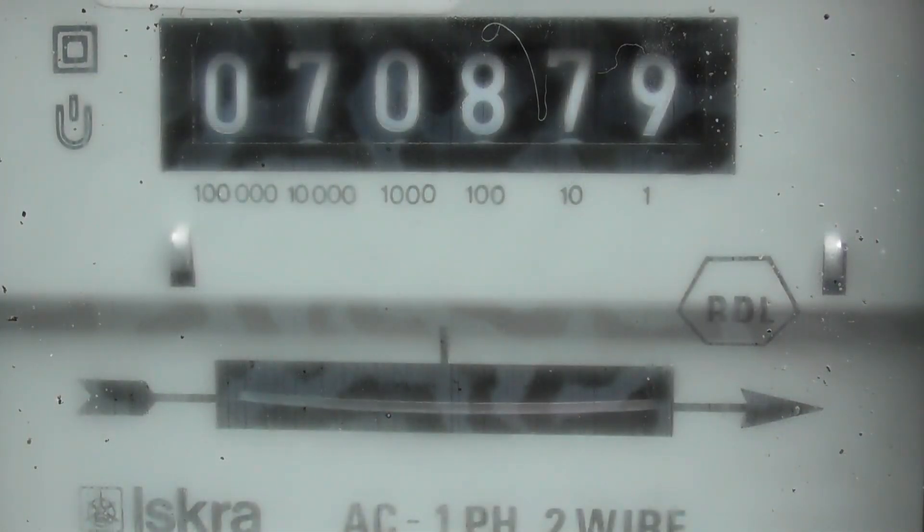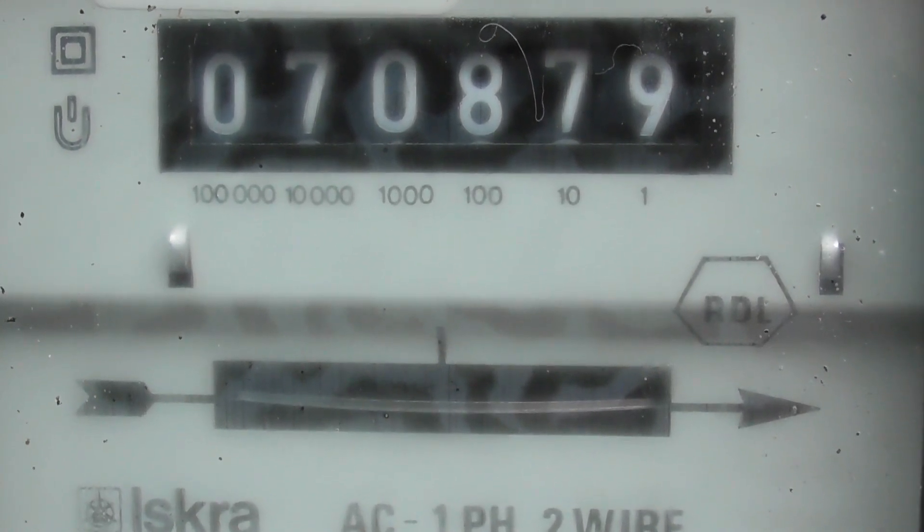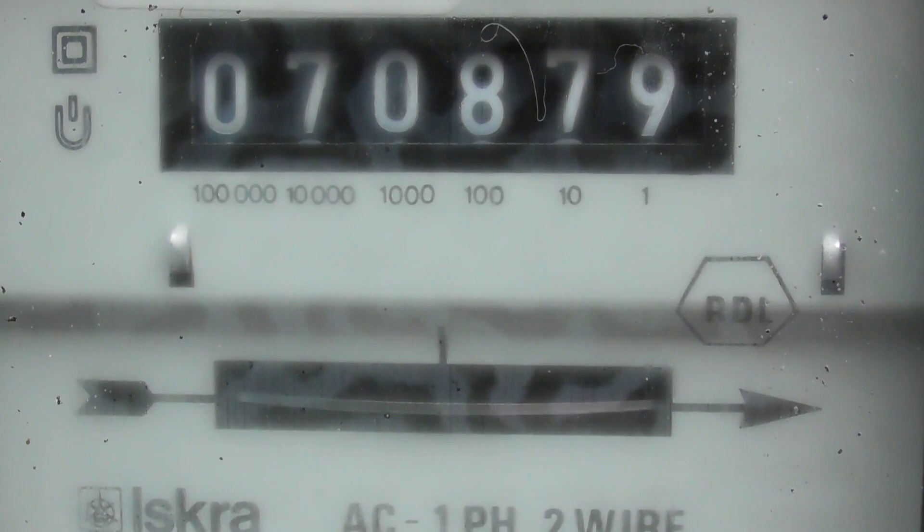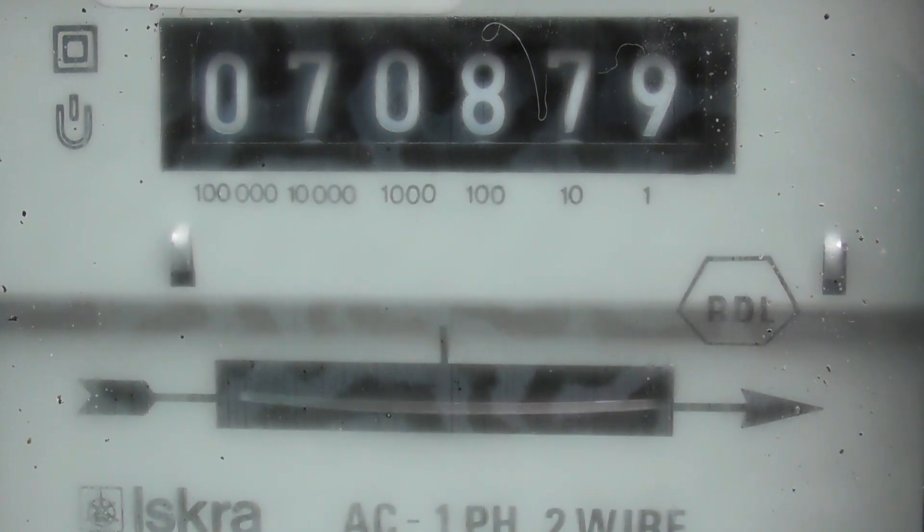Well then, the normal dial test check meter you see going forward hasn't got a reverse running stop. So I'll change the polarity. The meter will run the other way happily, so the numbers will count backwards.